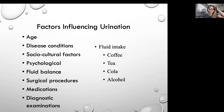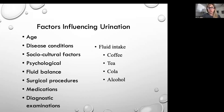Factors that influence urination include age — the very young and very old can have difficulty regulating urination — disease conditions, sociocultural factors, and psychological factors. A good example of psychological factors is stage fright: you really have to go, you walk into the public restroom, and then you just can't go because someone else is in there. Your brain can have more power over your ability to urinate than you'd like.